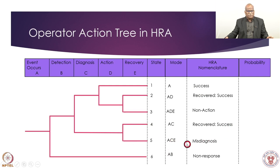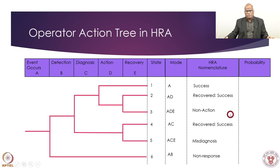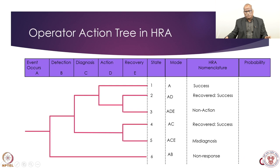If diagnosis is not successful and recovery was not proper, that is misdiagnosis with consequences. If detection itself is missing, there will be no response at all. So three successes and three failure modes. This is a very systematic way of analyzing. If we have probabilities of these events — generated from any human reliability technique such as THERP or HCR — we can assign them here and produce a complete human action treatment of the subject.